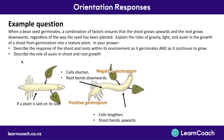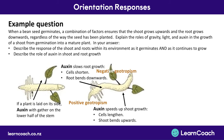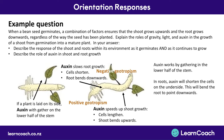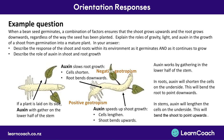The second part asks you to describe the role of auxin. Auxin gathers on the underside of the stem, then causes root cells to shorten so the roots grow downwards, whereas it causes shoot cells to elongate so the shoot points upwards. In your answer you can write: auxin works by gathering in the lower half of the stem — that's where gravity comes into play. In roots, auxin shortens the cells and bends them downwards; in stems, auxin lengthens the cells on the underside and bends the stem to point upwards.